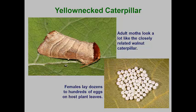When a favored host plant is found, the female can lay a batch of eggs on a leaf. The egg mass can contain several dozen to several hundred eggs. The females lay several of these masses during her lifespan.